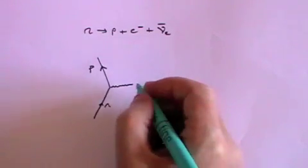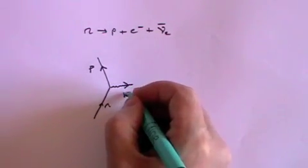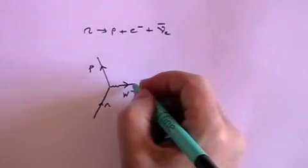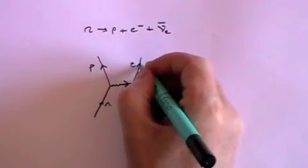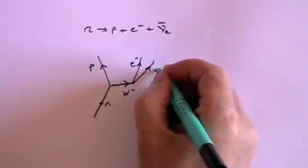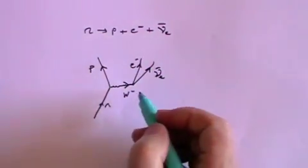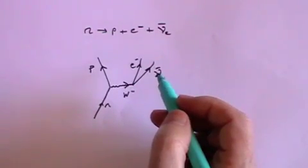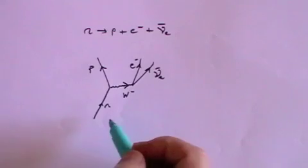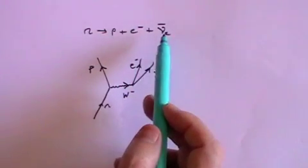Particles are shown by straight lines. This is a W minus boson, which quickly decays into an electron and an anti-electron neutrino. And both of those go out. So they're going upwards. Everything goes upwards. And that's the Feynman diagram for this reaction.